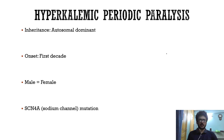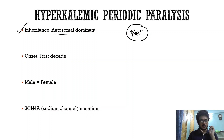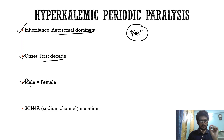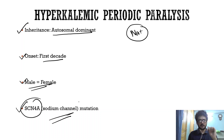Hyperkalemic periodic paralysis is due to sodium channel mutations. For MCQs: hypokalemic = calcium channel, hyperkalemic = sodium channel. Inheritance is autosomal dominant, onset is around the first decade, and sex distribution is equal — unlike hypokalemic PP where males are more commonly affected. The specific mutation is SCN4A, a sodium channel gene — a commonly asked MCQ point.